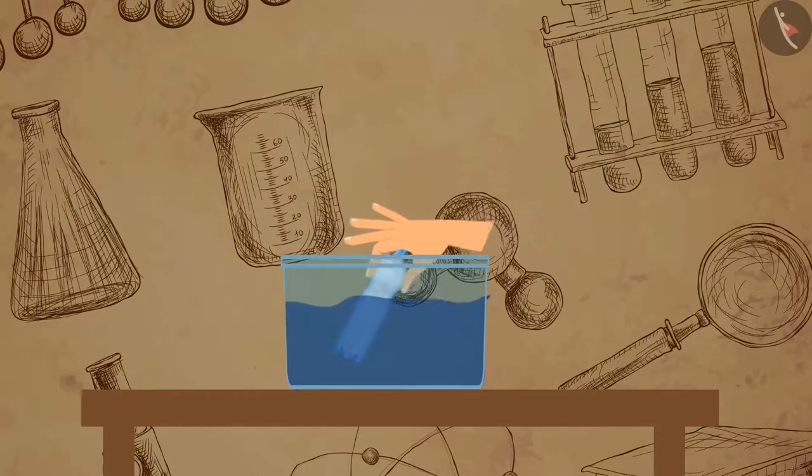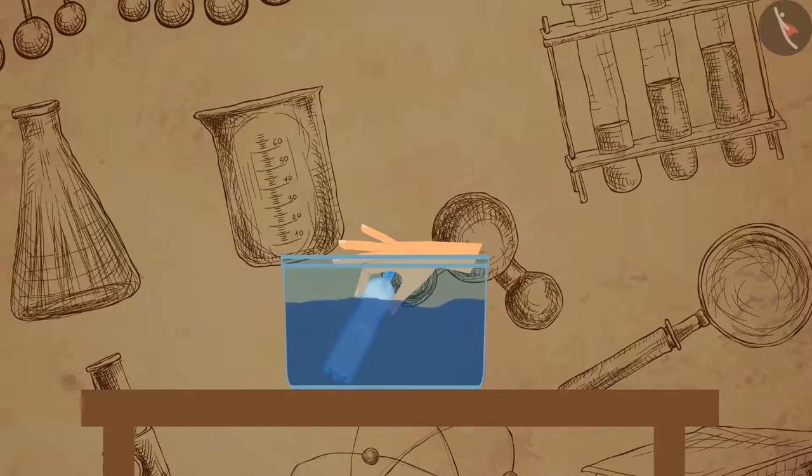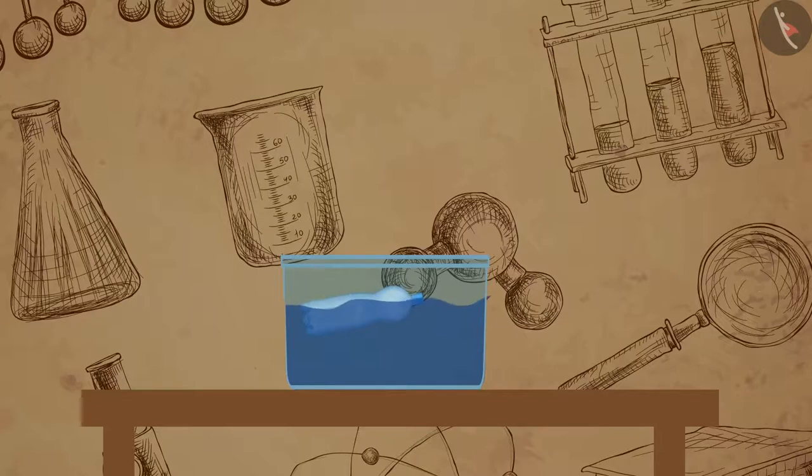Push the bottle further till the bottom of the bucket and release it. You will notice that the bottle bounces back and floats on the water. Is gravitational force not acting on the bottle? Why does it keep bouncing back to the surface?